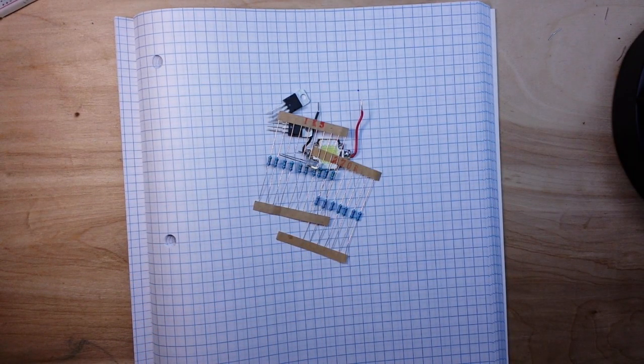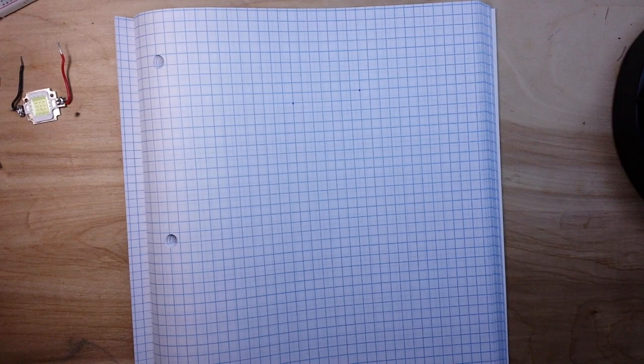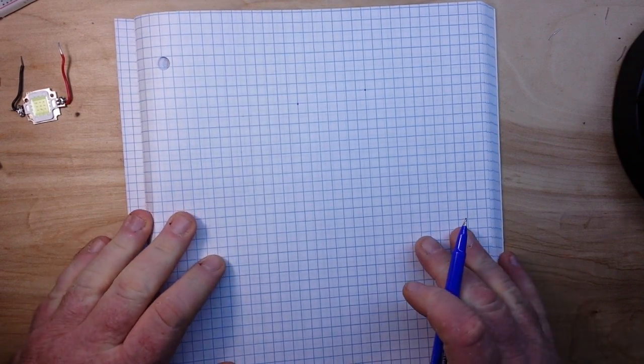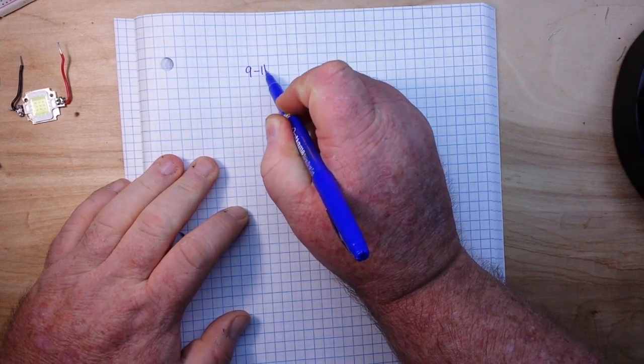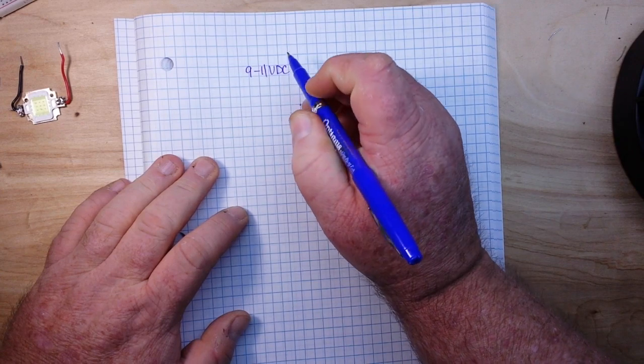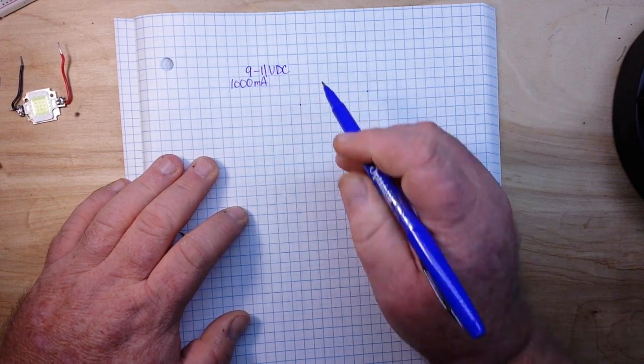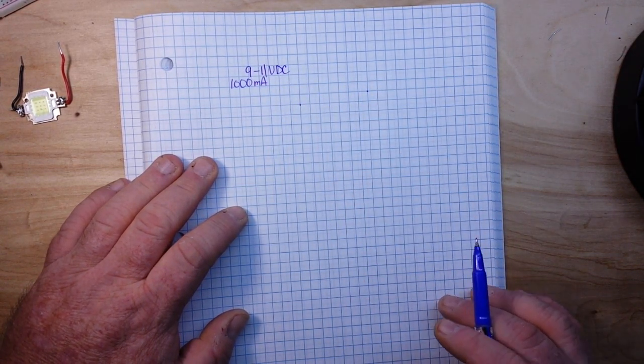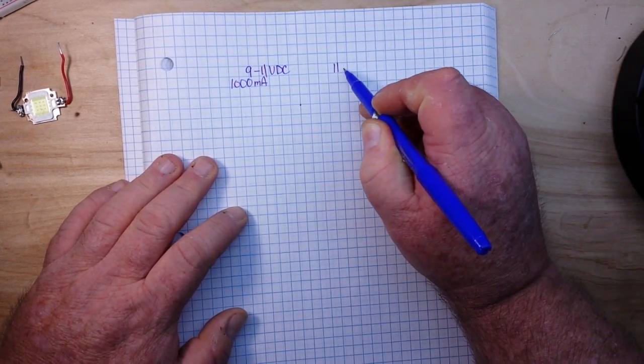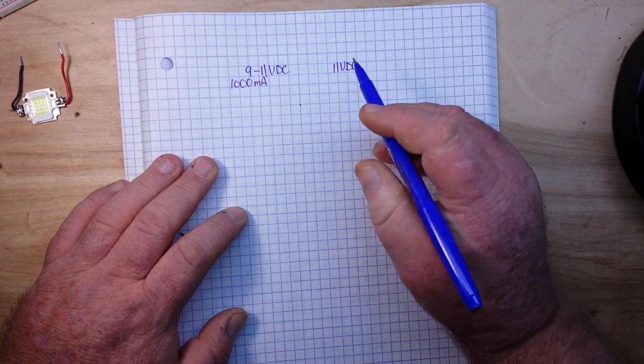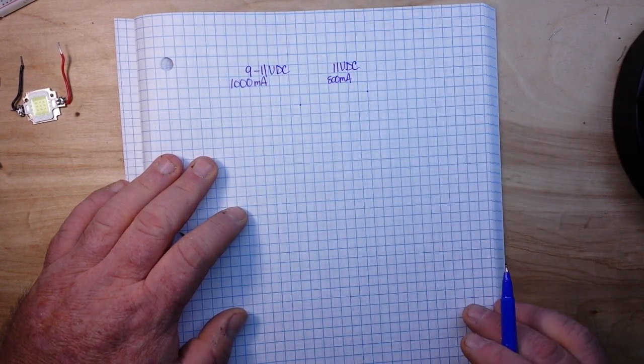So let's take a look at how we're going to wire this circuit up. All right, the first thing we need to know are the specs on the LED, and this particular LED wants 9 to 11 volts DC and 800 milliamps to drive it. Now just to be on the safe side we are going to drive it at 11 volts DC but we're only going to put in around 800 milliamps just to keep it running a little bit on the cool side.